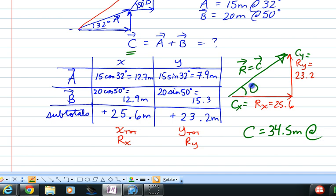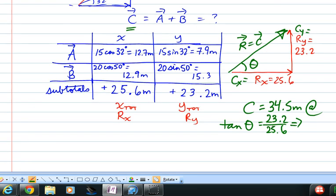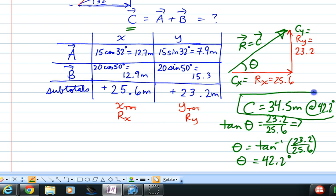And then we want to find the angle. So again the tangent of the angle is y over x or 23.2 over 25.6. So that means that the angle is the inverse tangent. So we do that real quick. And that gets us about 42.2 degrees. So that's 42.2 degrees. And that is our final answer for the vector c.